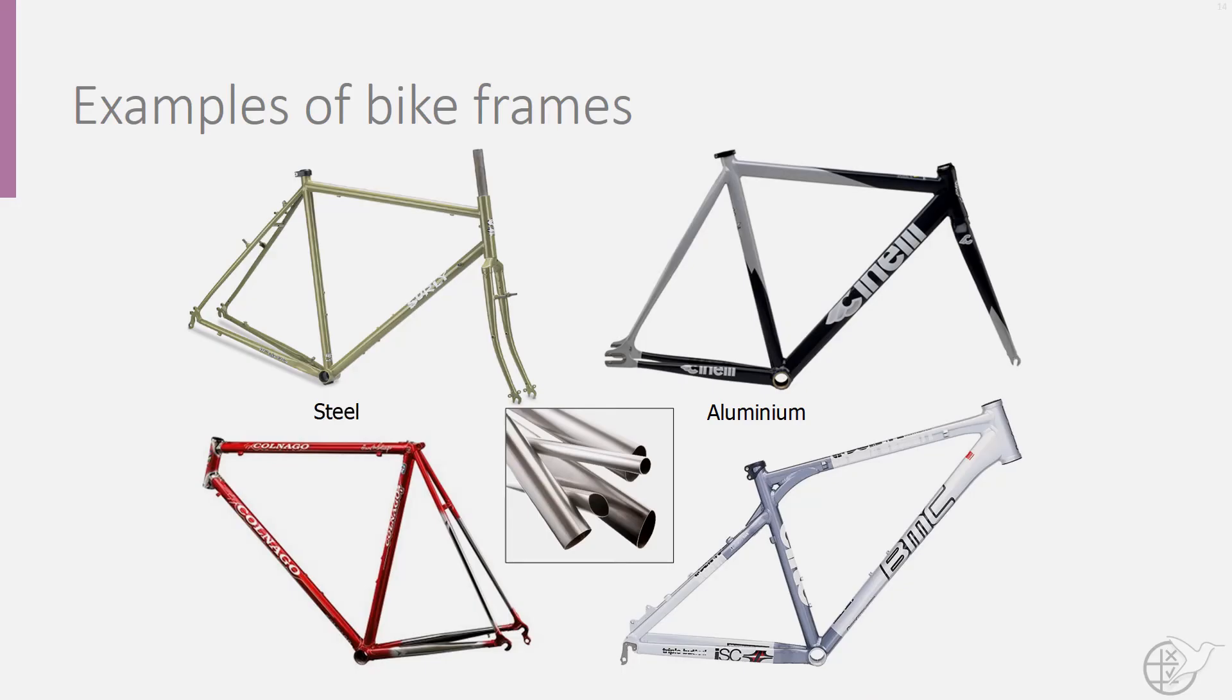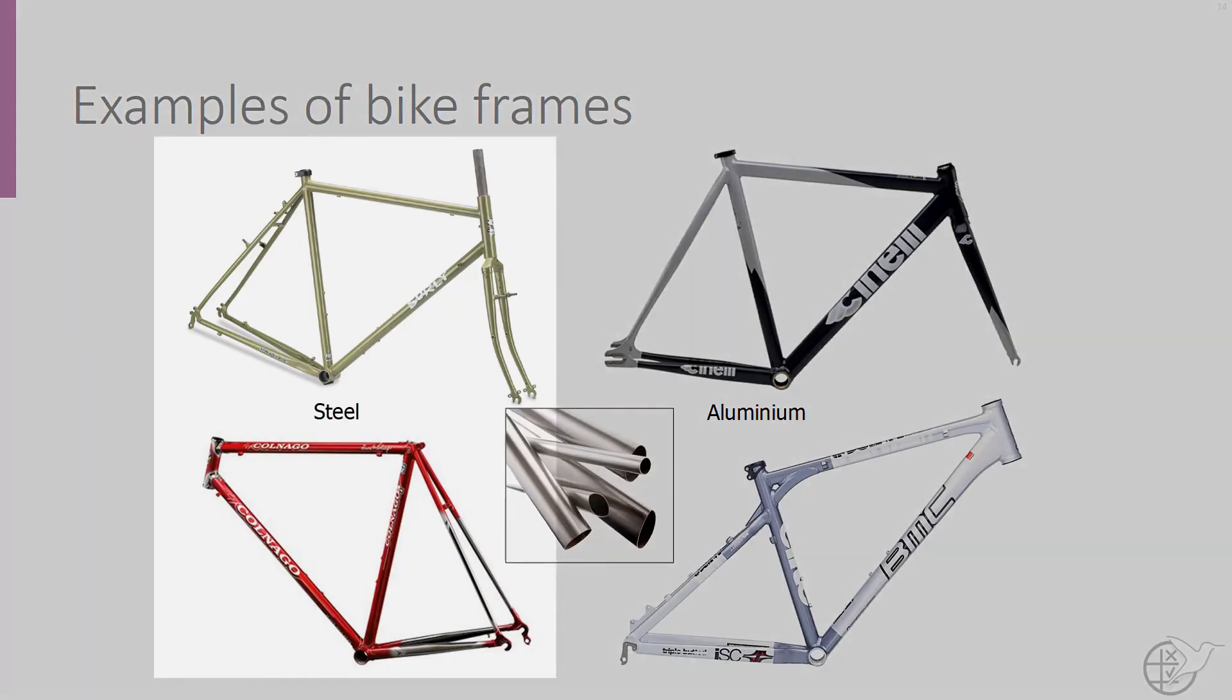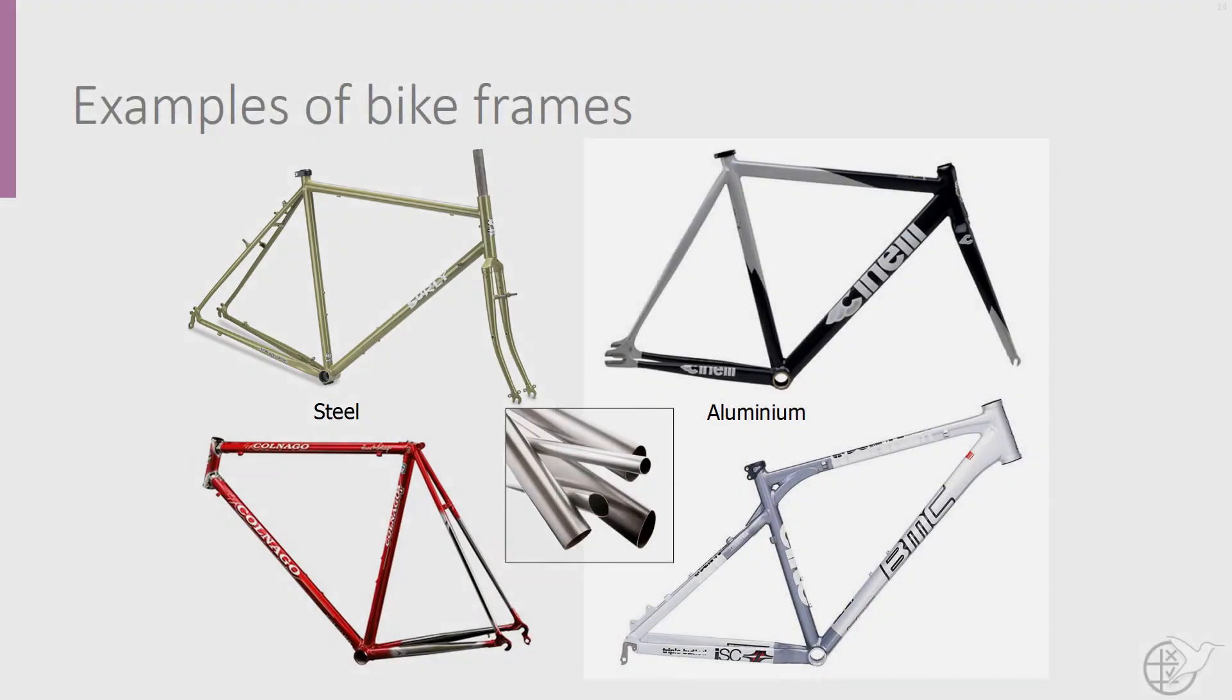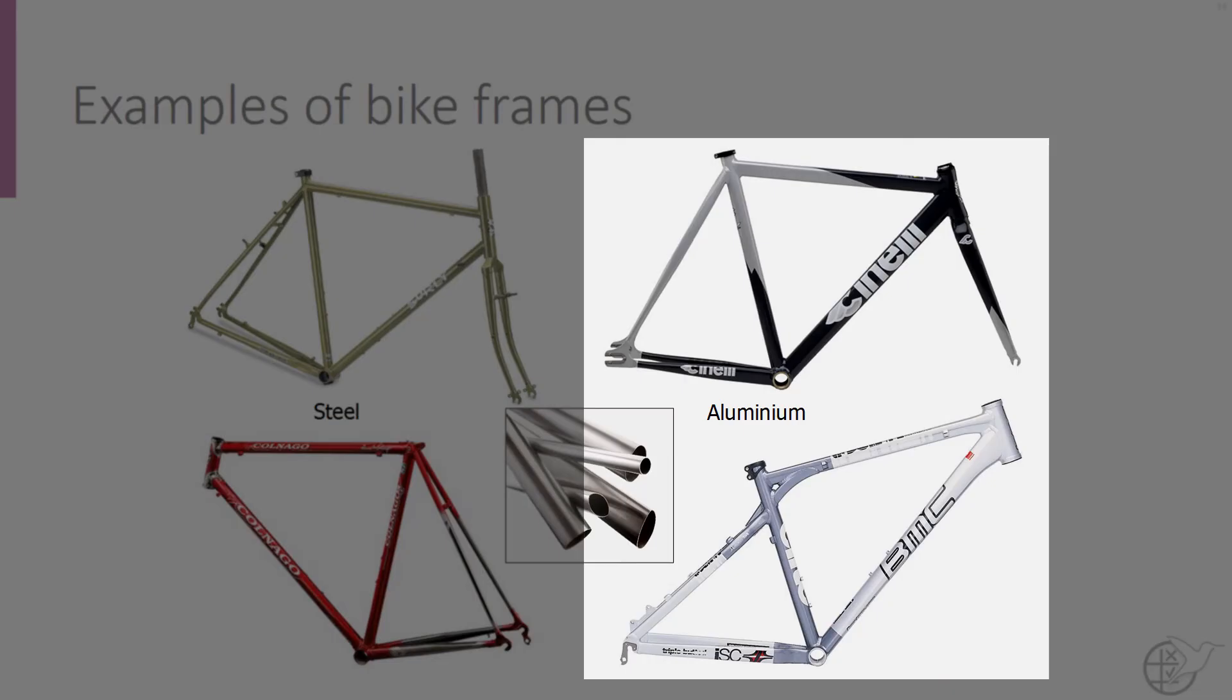So it makes sense that bicycle frames are made out of thin walled hollow tubes. Here we can see examples of aluminum and steel bike frames. But wait a second, why do the tubes in the steel bike frames seem to be consistently smaller than those in the aluminum bike frames?